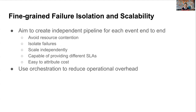Finally, you need to have fine-grained failure isolation and scalability. You should aim to create independent stream processing jobs or pipelines for each event — this avoids resource contention, isolates failures, and makes it easy to scale each pipeline independently. You also get the added benefits of being able to provide different SLAs for different events and easily attribute costs at the event level. Because you're creating many independent services and pipelines, it's crucial to create an orchestration service to automate things and reduce operational overhead.